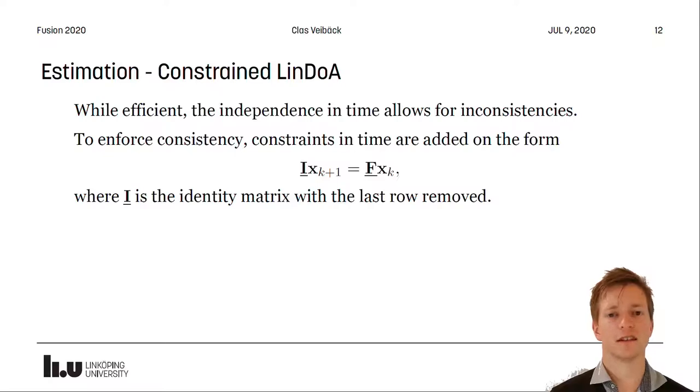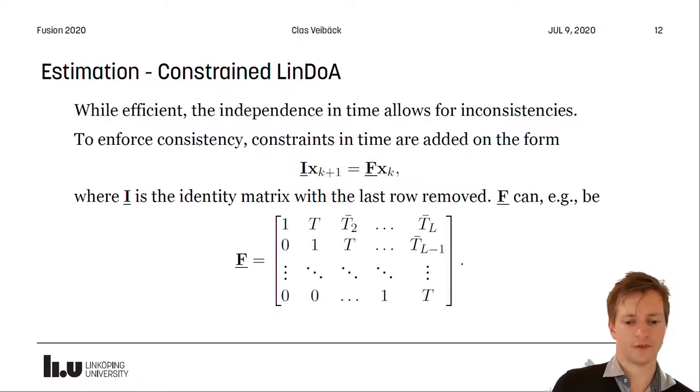So to enforce consistency we add constraints to this estimation problem here. We will connect the signals and its derivatives over time. For example, we can use this F matrix to enforce that the derivatives in time and space are equal.